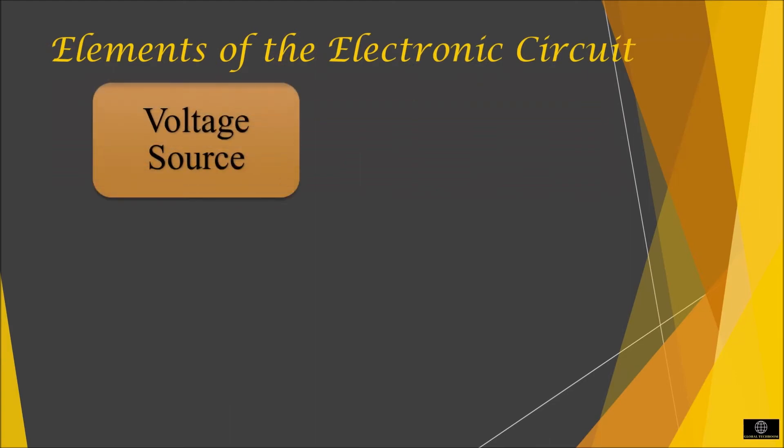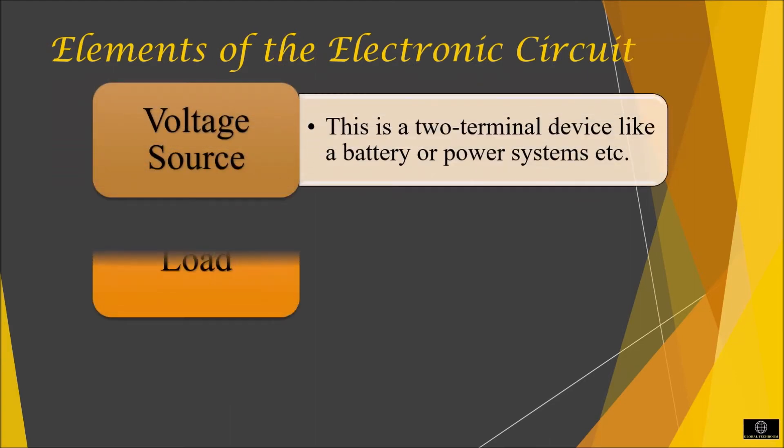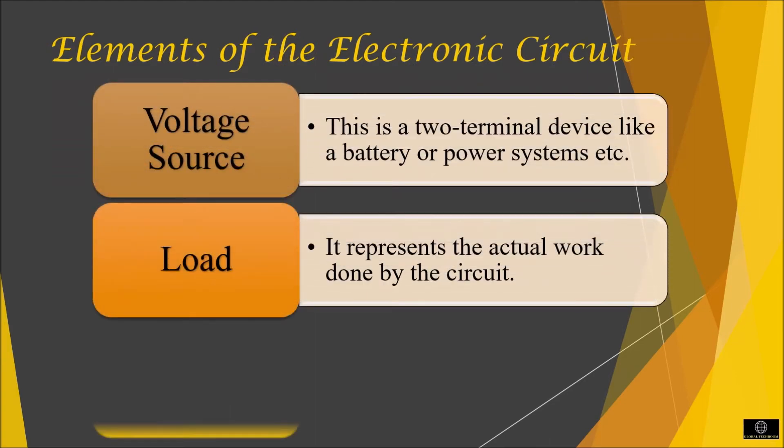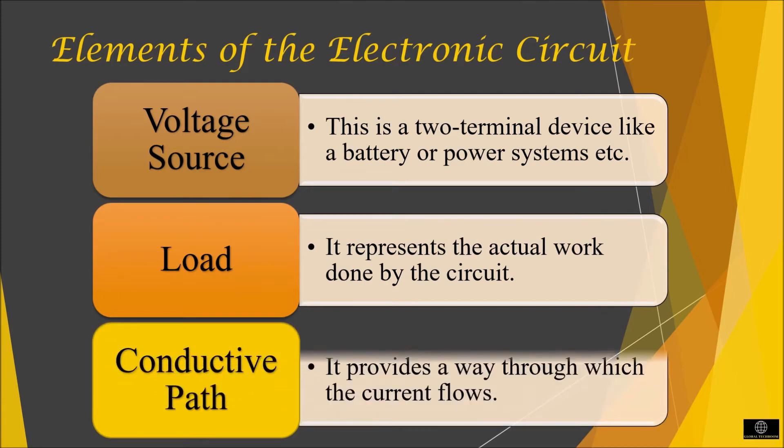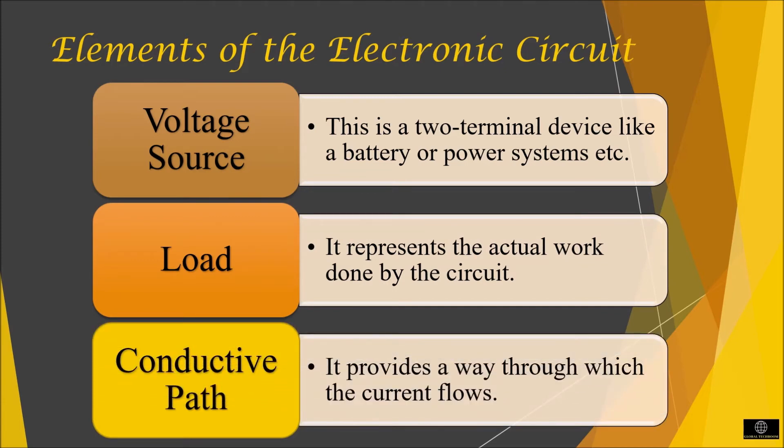Circuits can be simple or complex. The simplest circuits have three basic elements: Voltage source, load and the conductive path. Voltage source is a two terminal device like a battery or power system that provides a voltage in the circuit that causes the current to flow.